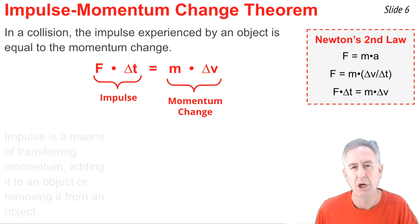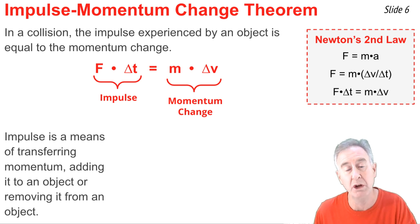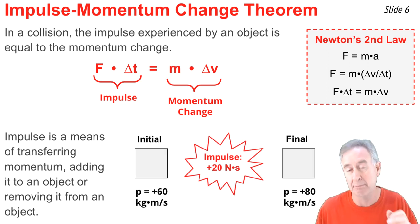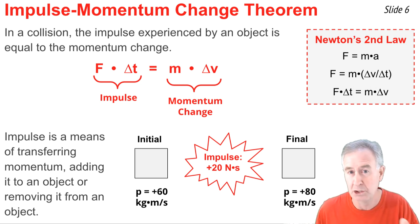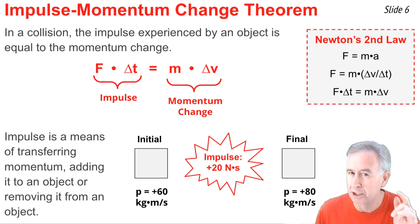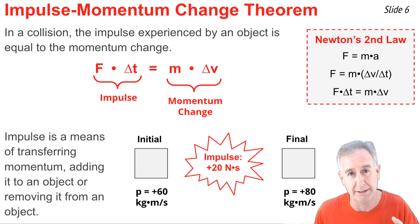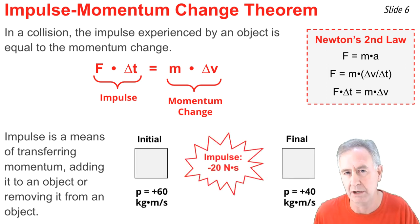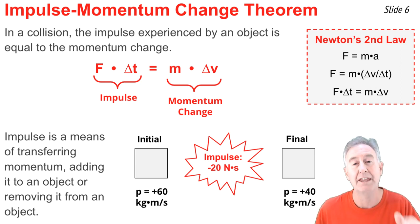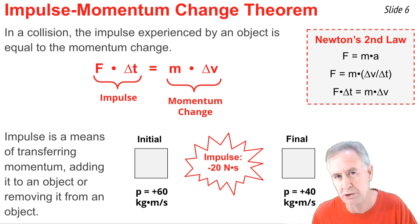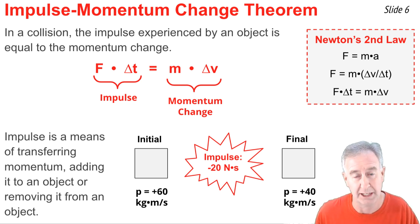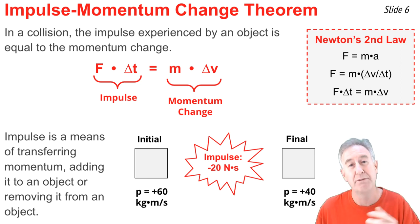We apply the impulse momentum change theorem to collisions by thinking of impulse as a means of either adding or removing momentum from an object. For example, an object with 60 units of momentum that receives a positive impulse of 20 units ends up with 80 units of momentum. Conversely, if the impulse is negative 20 units — meaning it acts against the object's motion — it removes momentum, and the object goes from 60 units down to 40 units of momentum.